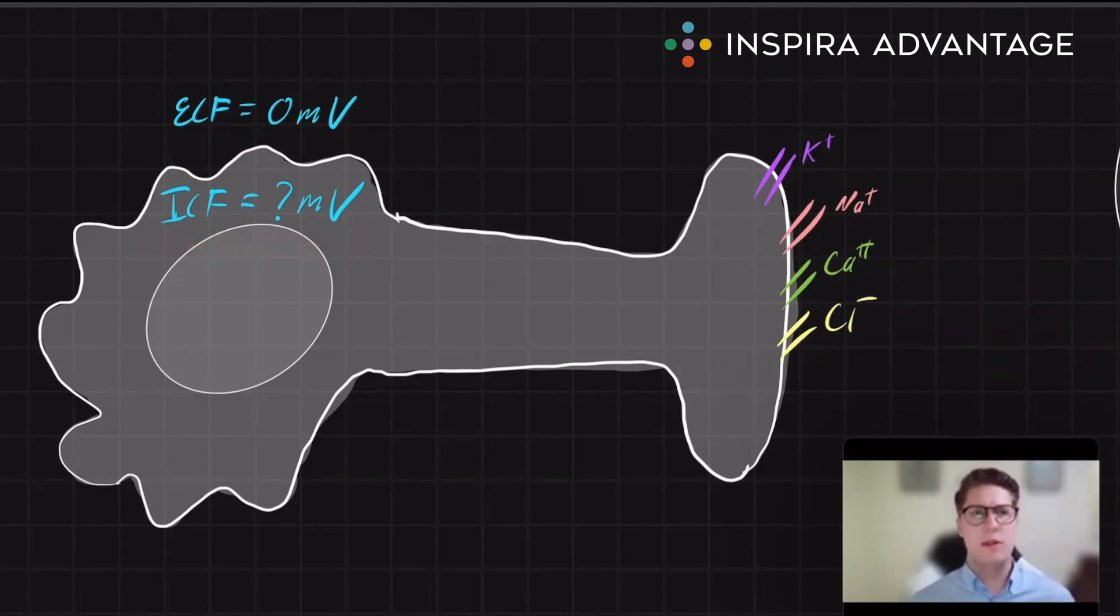So when dealing with the neuron for the MCAT, we're going to pretend only four ions exist. And functionally, four are really only important. These are sodium, potassium, calcium, and chlorine.